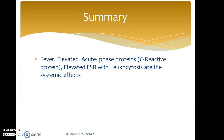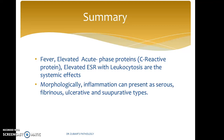To summarize, the systemic effects of inflammation are fever, elevated acute phase proteins such as CRP, elevated ESR, leukocytosis, rigors, and chills. In severe conditions, it can lead to sepsis and disseminated intravascular coagulation. Morphologically, inflammation can present as serous, fibrinous, ulcerative, and suppurative types.